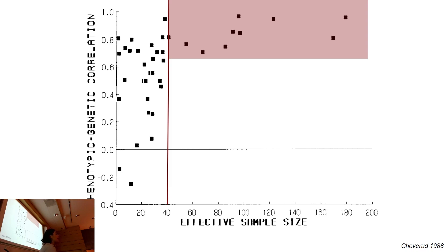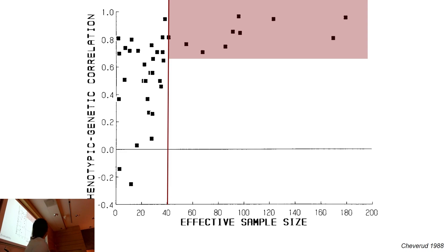Previous work has shown that there may be a way to estimate G from P — to substitute your phenotypic matrix in lieu of having a genotypic matrix — at large sample sizes. Forty individuals maybe doesn't sound like a lot, but for a population of mammals through time, that's actually quite a lot. So we often look to invertebrates, like that amazing foram dataset — invertebrates are a great group to look at.